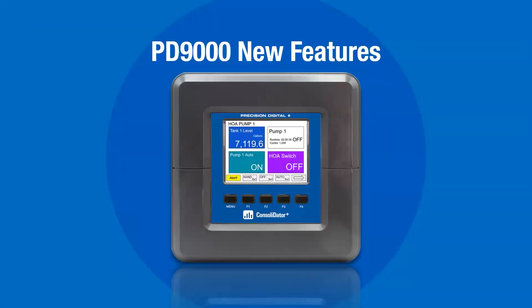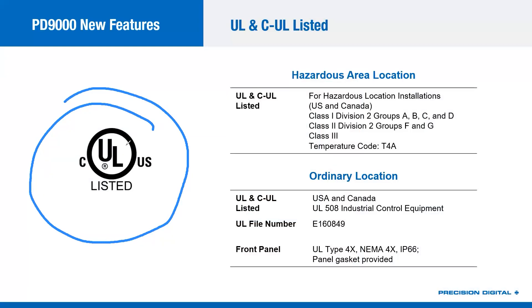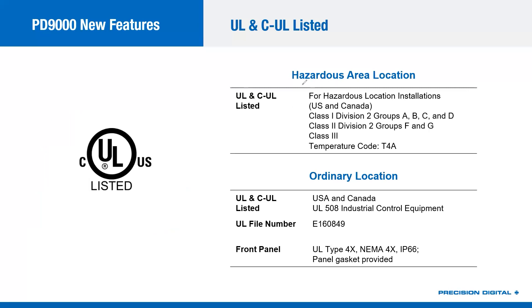Let's dive into the new features on the Consolidator Plus. Beginning with UL and CUL listing — you will now see this UL mark on the side and on the label. It means the product is both U.S. and Canadian listed: UL for Underwriters Laboratories and CUL for the Canadian version. It is UL listed for both hazardous area locations, carrying Class 1 Div 2 approvals, and for ordinary locations under UL 508.